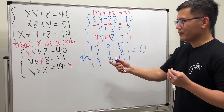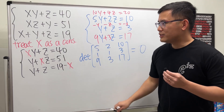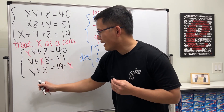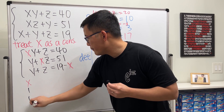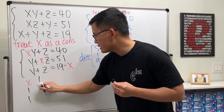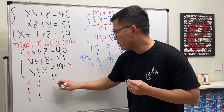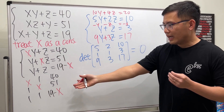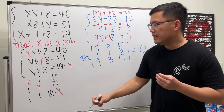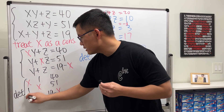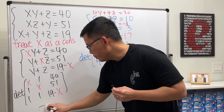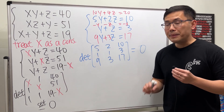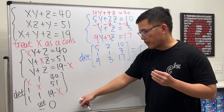Now how can we use this to our advantage? Let's put our original system into a 3×3 matrix. We have x, 1, 1 / 1, x, 1 / and the right-hand side column: 40, 51, 19 − x. Now we have a 3×3 matrix and let's look at its determinant — and hope we can get zero out of it. But be careful, there's a caveat before we compute.